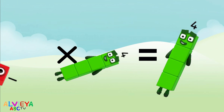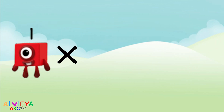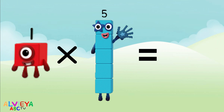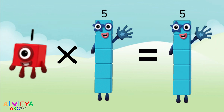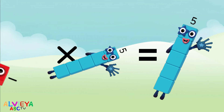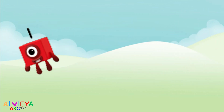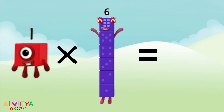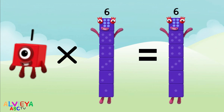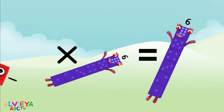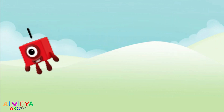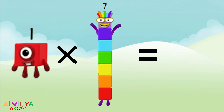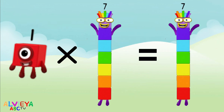One times four equals four. One times five equals five. One times six equals six. One times seven equals seven.